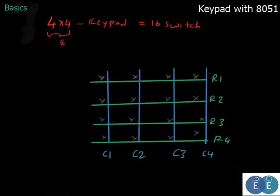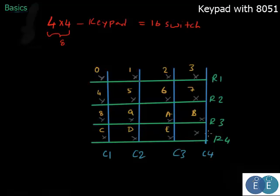We have all these switches here. Let's say this is our switch — zero, one, two, three, four, five, six, seven — and you can name these in any way you want depending on what output you want when you press a particular switch. Assuming this is 0 to 3, this is 4 to 7, this is 8 to B, and this is C to F — these are the sixteen keys we want to decode.